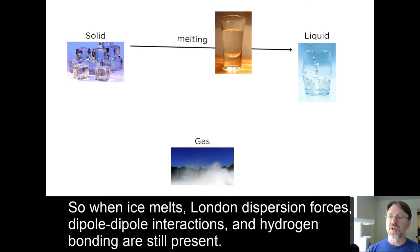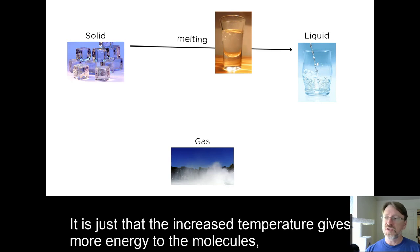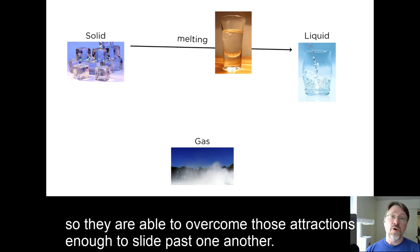When ice melts, London dispersion forces, dipole-dipole interactions, and hydrogen bonding are all still present. It's just that the increased temperature gives more energy to the molecules, so they are able to overcome those attractions enough to slide past one another.